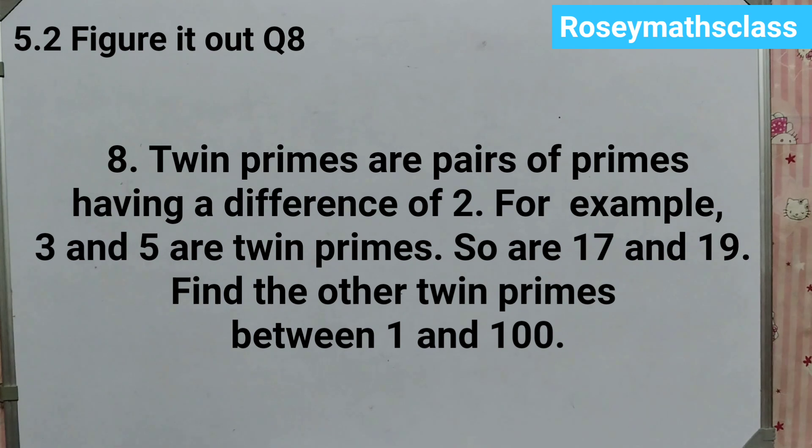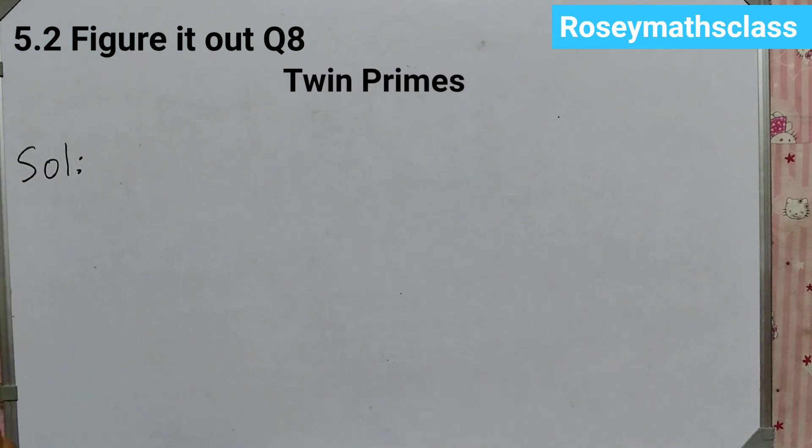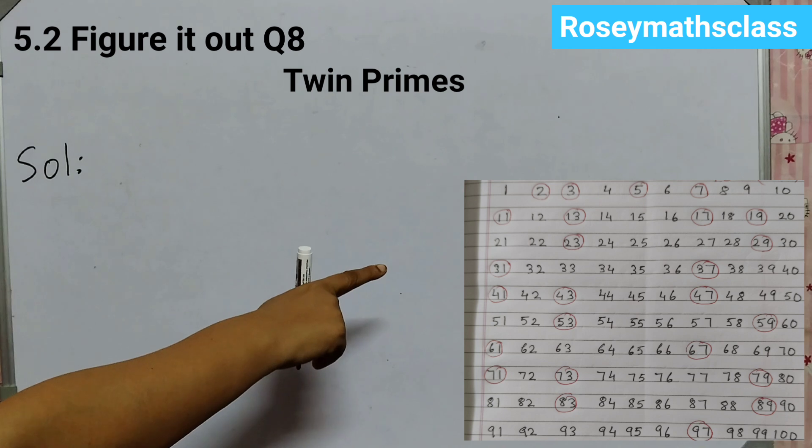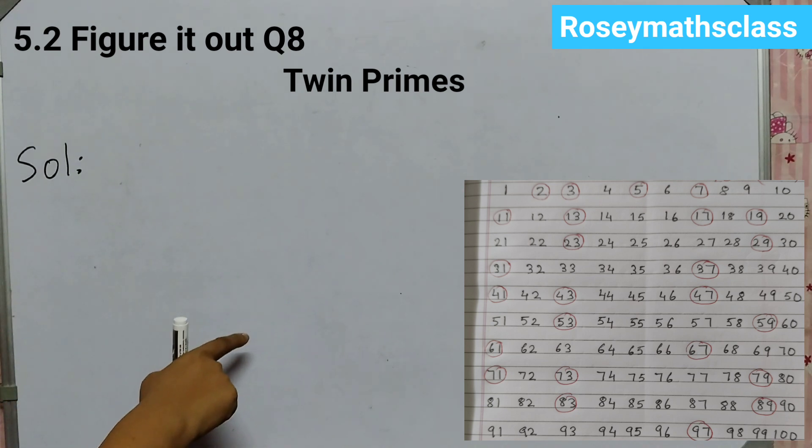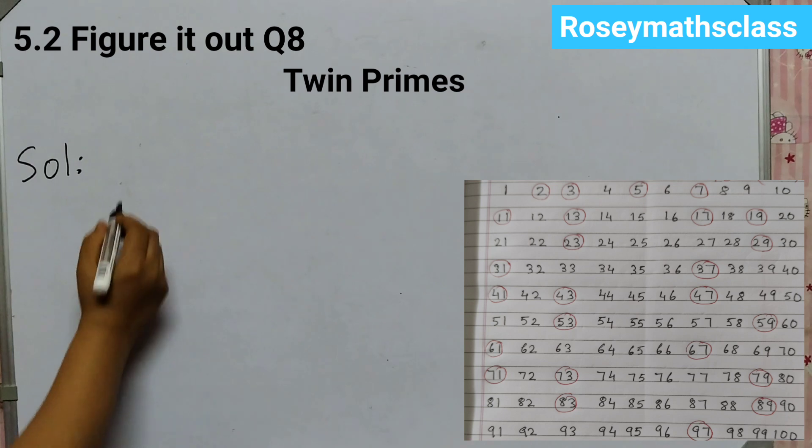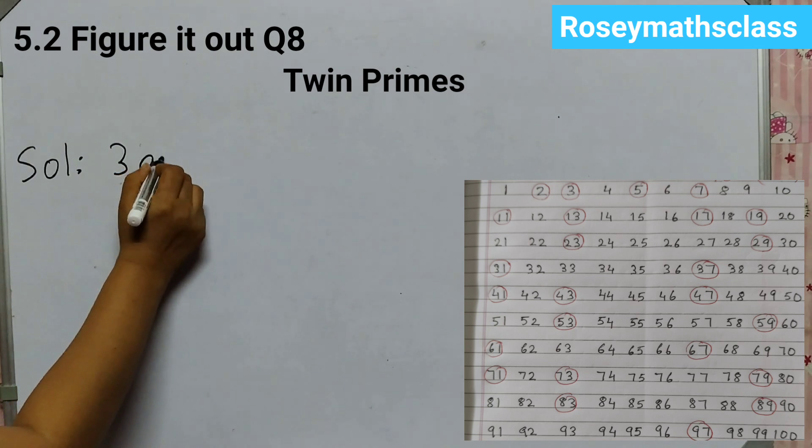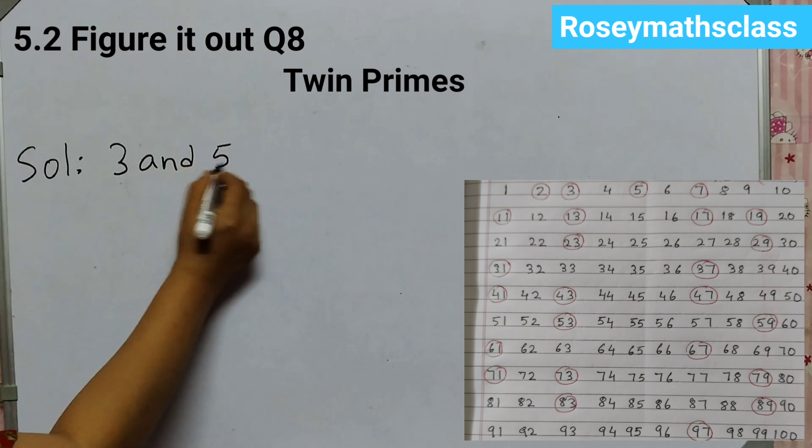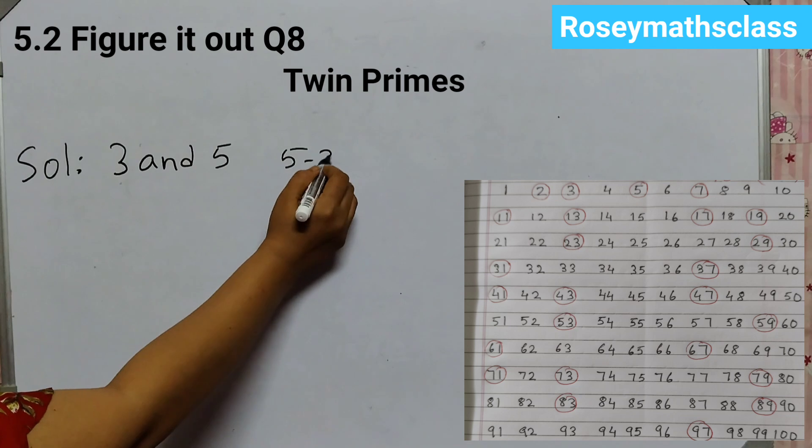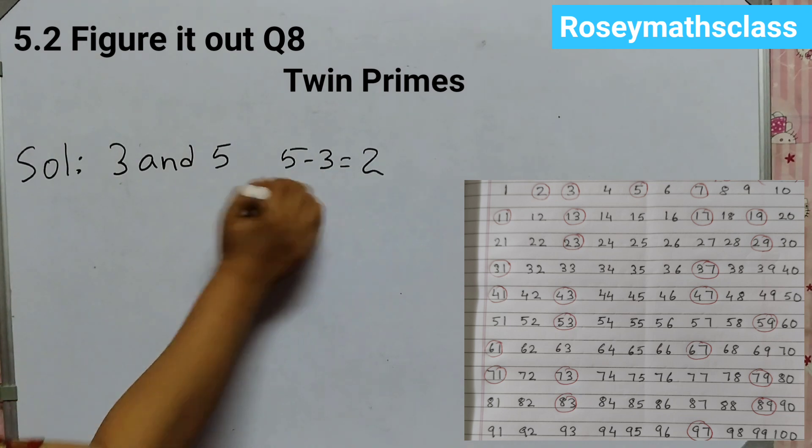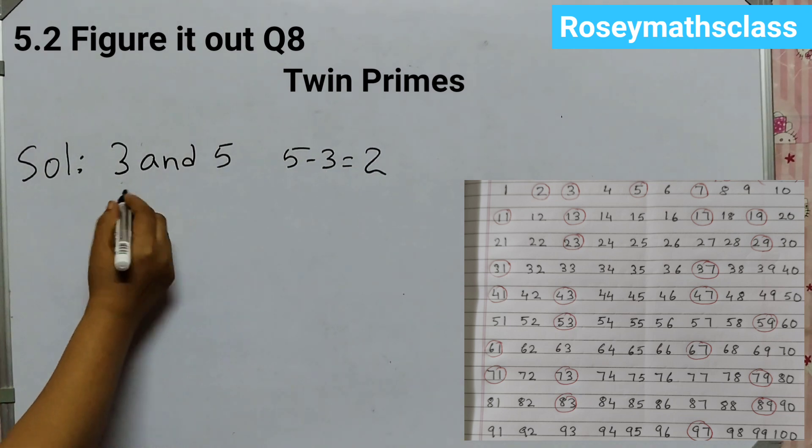So let's understand what are twin primes. Twin primes are prime numbers. Here you can see on the right hand side, there are prime numbers which I have circled, and twin primes are those prime numbers whose difference is 2. For example, 3 and 5. If I do 5 minus 3, the answer is 2.